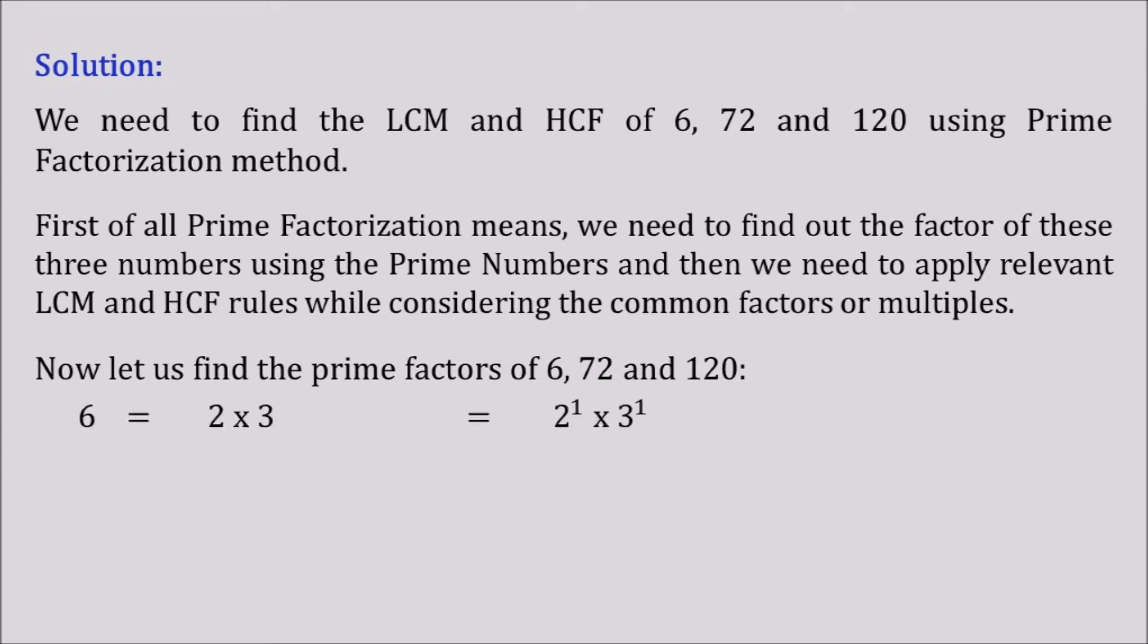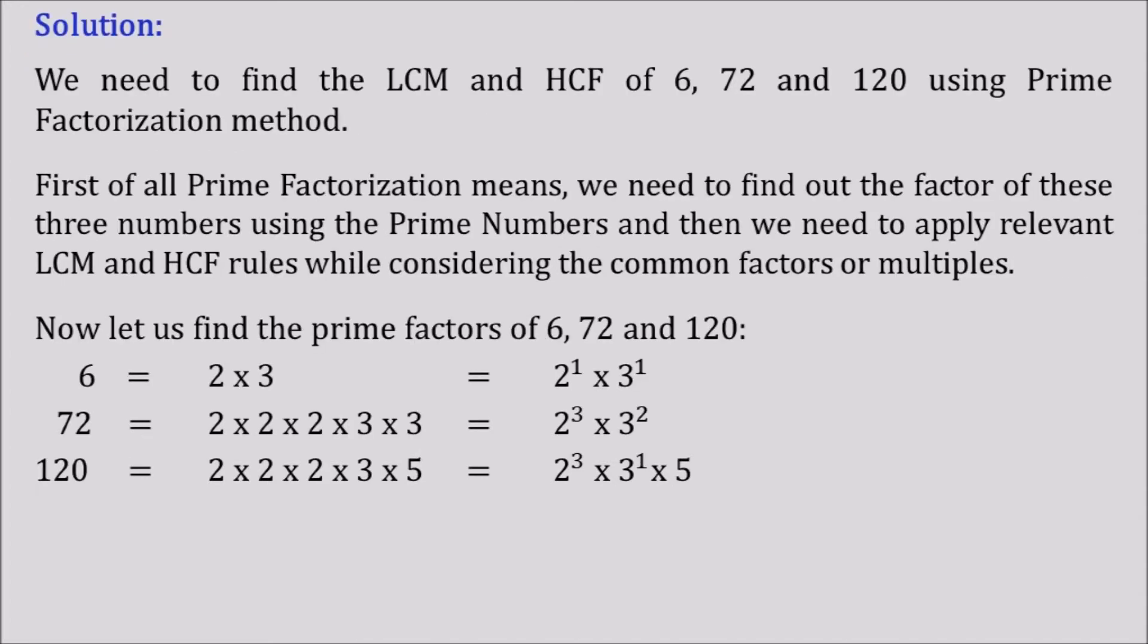Coming to 6, the prime factors of 6 is equal to 2 into 3, that I can write as 2 to the power 1 and 3 to the power 1. Similarly for 72, it is 2 into 2 into 2 into 3 into 3 which is nothing but 2 to the power 3 and 3 to the power 2. Coming to 120, it is 2 into 2 into 2 into 3 into 5 which is nothing but 2 to the power 3 into 3 to the power 1 into 5.